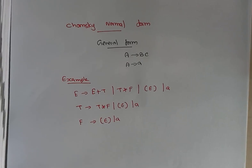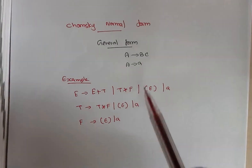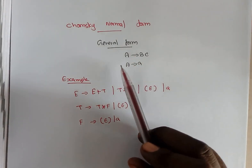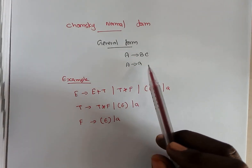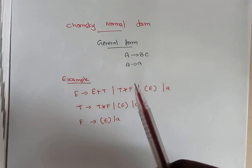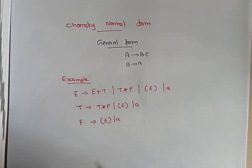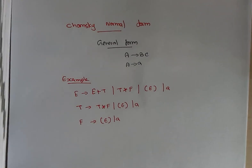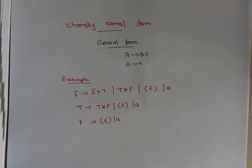This session will cover how to convert any grammar to Chomsky Normal Form. The general format for Chomsky Normal Form is of the form: a variable tends to two variables, or a variable tends to a single terminal symbol. The reason we want to convert any grammar to Chomsky Normal Form is to remove ambiguity from the grammar.